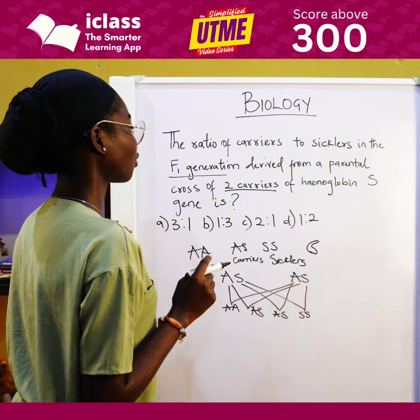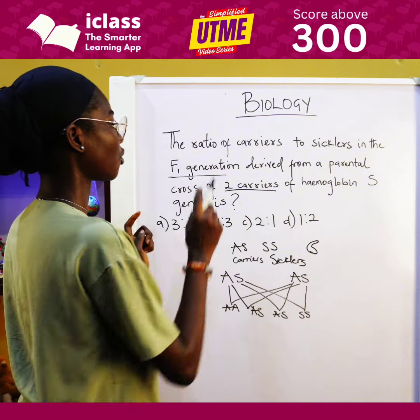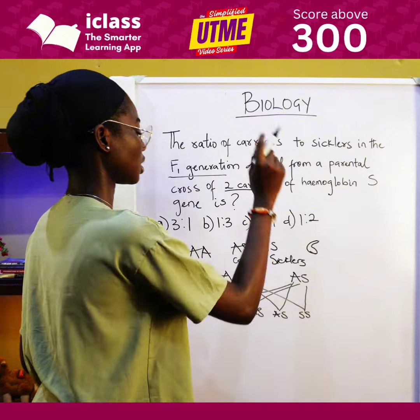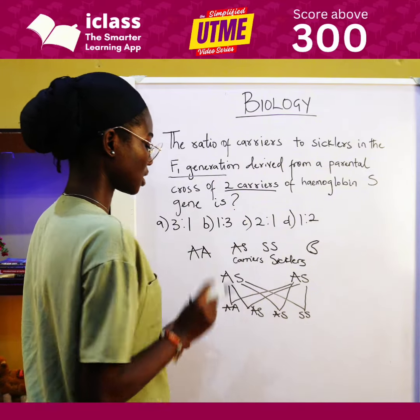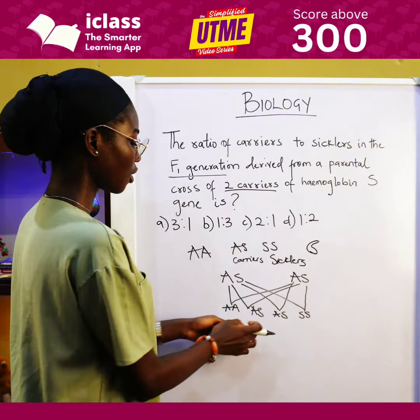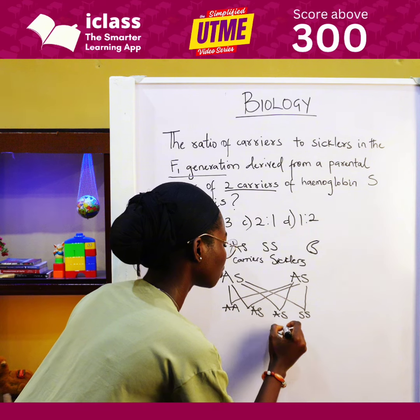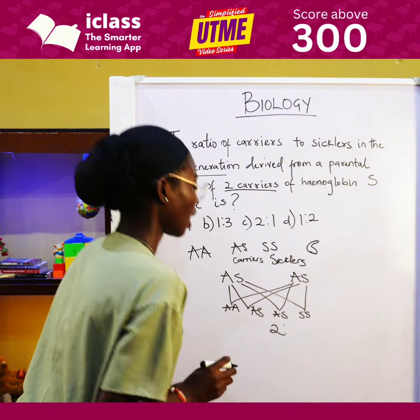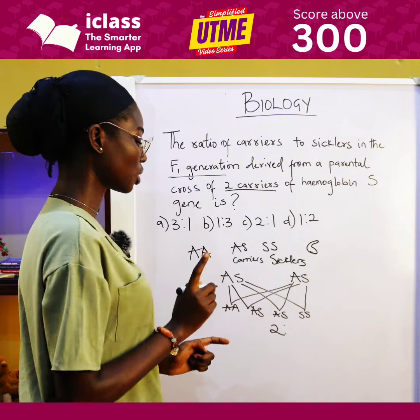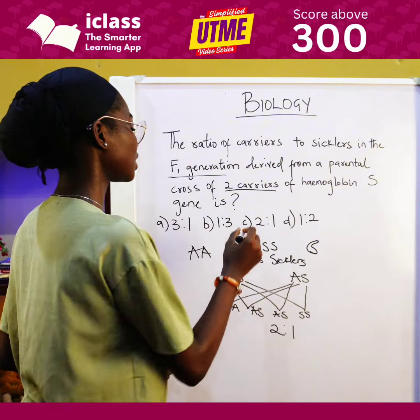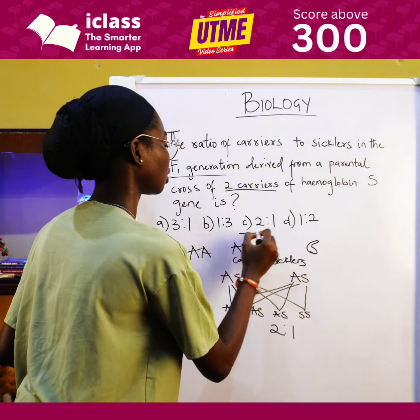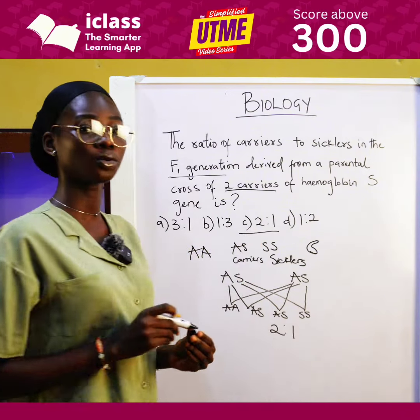Our question asks for the ratio of carriers to sickles. The carriers are AS — from our cross we have two AS carriers. And we have just one sickle, which is SS. So the ratio is 2 is to 1, making our answer C.